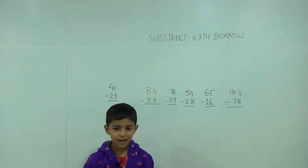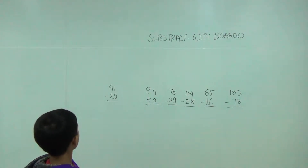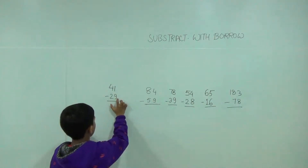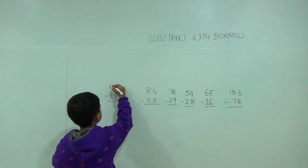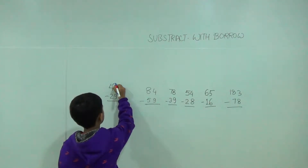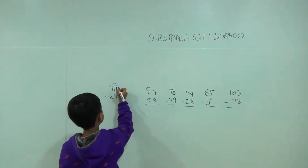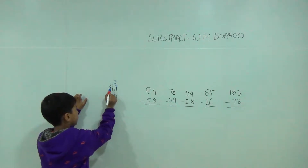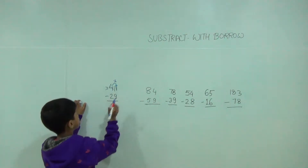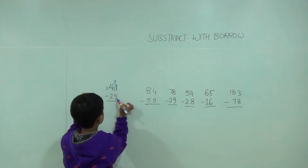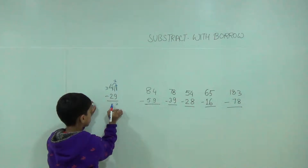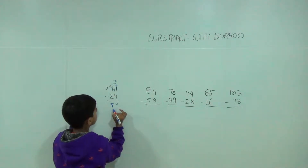Today we will learn subtraction with borrow. 1 is smaller than 9, so we will give — borrow 1 — so here the number would be 11 and 4 will become 3. Then 11 minus 9 is equal to 2, and 3 minus 2 is equal to 5. So the answer would be 52.